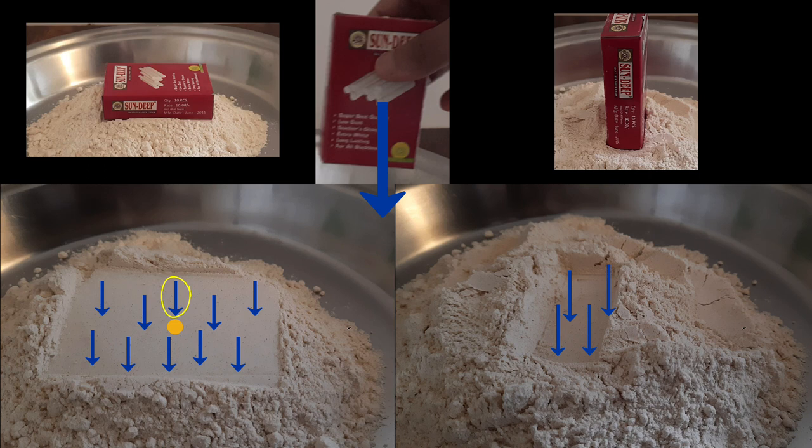For the case on the right, the amount of force that appears or acts on any one point on the flour is larger. So if we have the same force, then the depth of the mark is less when the box was kept horizontal, and the depth of the mark is more when the box was kept vertical.